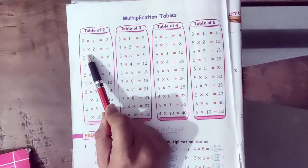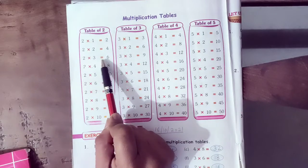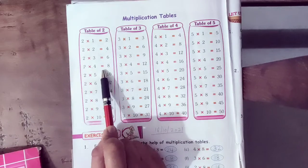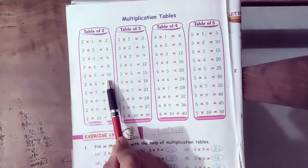2 ones are 2, 2 twos are 4, 2 threes are 6, 2 fours are 8, 2 fives are 10.